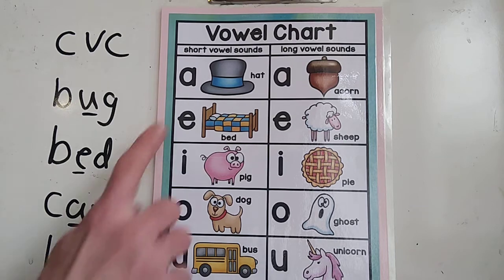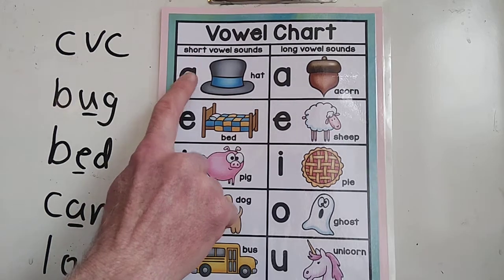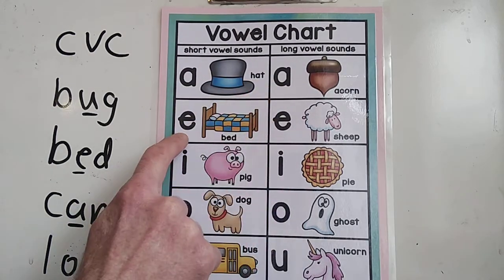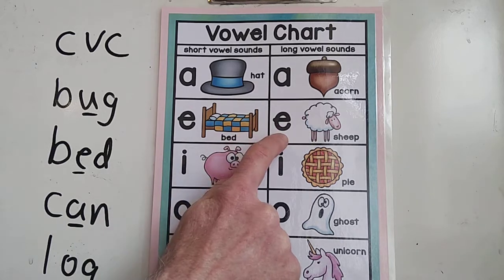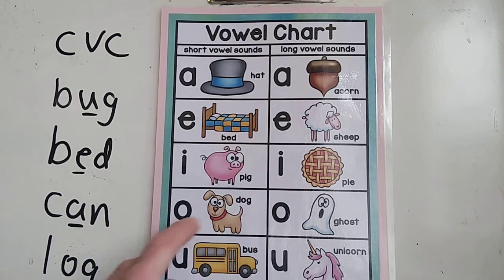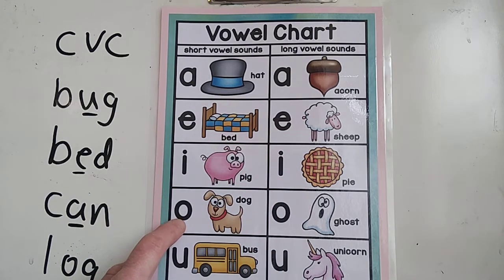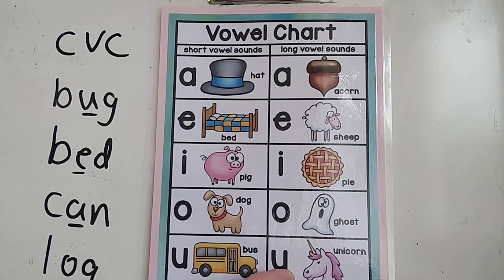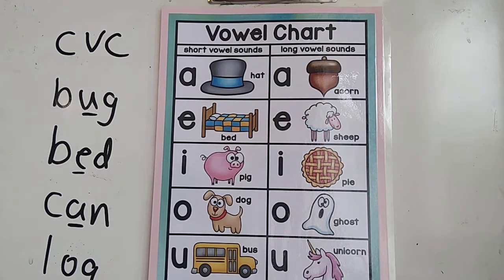Compare to the short vowels: short A is 'ah', long A is 'A'. Short E is 'eh', long E is 'E'. Short I is 'ih', long I is 'I'. Short O is 'ah', long O is 'O'. Short U is 'uh', long U is 'U'. So the long vowel sound is just the name of the letter — that's easy enough to remember.